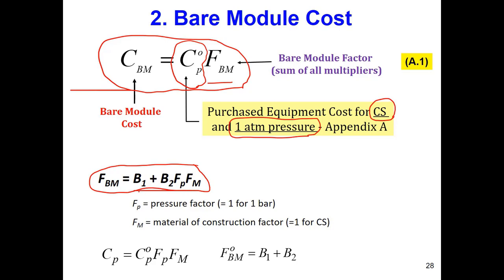The bare module factor FBM has the equation: FBM = B1 + B2 × Fp × Fm. B1 and B2 are factors we find from tables. Fp is the factor that corrects for pressure, and Fm is the factor that corrects for material of construction. If the operating pressure is one bar, Fp equals one. If the material of construction is carbon steel, Fm equals one.